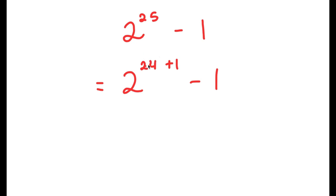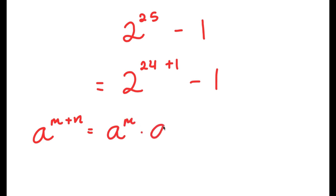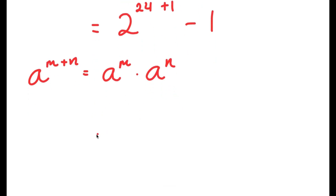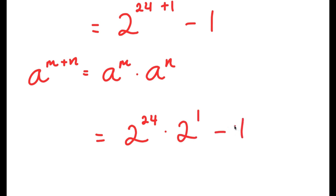The reason I'm rewriting 25 as 24 plus 1 is so I can use the property: a to the power of m plus n is equal to a to the power of m times a to the power of n. So 2 to the power of 24 plus 1 is going to equal 2 to the power of 24 times 2 to the power of 1, minus 1.